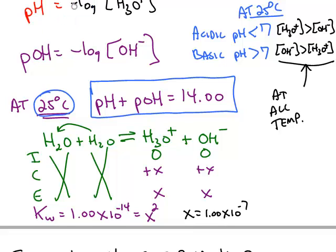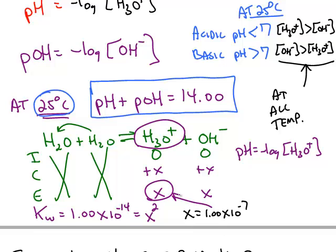So from there, we could calculate the pH, the negative log of hydronium. According to the ice chart, hydronium at equilibrium is X. And we just found X was 10 to the negative 7th. So if you take the negative log of 10 to the negative 7th, you get a pH of 7.00.